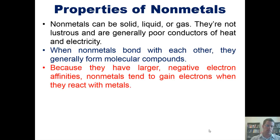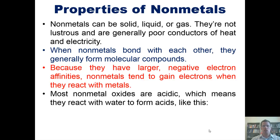Because they have larger negative electron affinities, which means they like electrons, nonmetals tend to gain electrons when they react with metals. That is, they steal those electrons from the metals. Most nonmetal oxides are acidic, which means they react with water to form acids, as seen in this equation. Carbon dioxide, an example of a nonmetal molecular compound, reacts with water to form this molecule called carbonic acid.